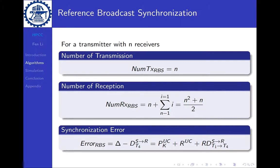For a transmitter with N receivers, let's evaluate the energy and synchronization accuracy. When we evaluate the energy, we will take into consideration the number of messages for transmission and reception. Here in RBS, the number of transmissions is N, and the number of receptions is N squared plus N divided by two. The synchronization error is derived using the below equation. You can check the details in the appendix.